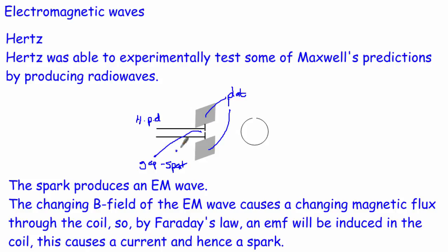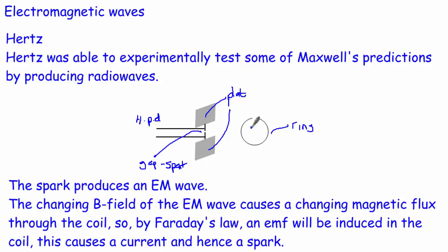The electromagnetic waves then travelled outward and he detected them using a ring of wire with a very small gap. As the waves passed through, the magnetic part of the wave caused a changing magnetic flux through the ring. By Faraday's law a changing magnetic flux induces an EMF, and because the gap was very small a current was generated and a spark appeared in the detector ring.